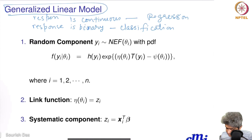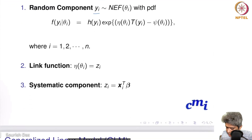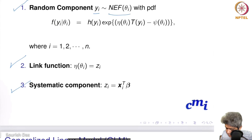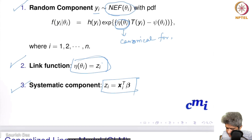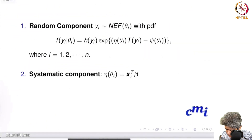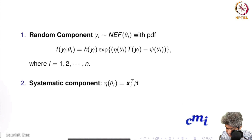A Generalized Linear Model has three components: a random component yi (following a Natural Exponential Family distribution), a link function, and a systematic component. The canonical form η(θi) is set equal to zi, where zi = xi^T * β, giving us the GLM formulation: η = xi^T * β.